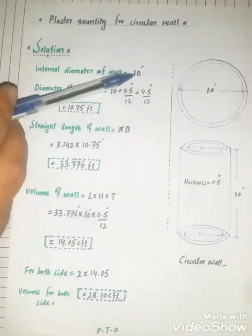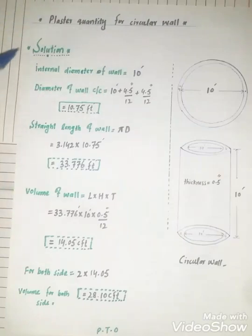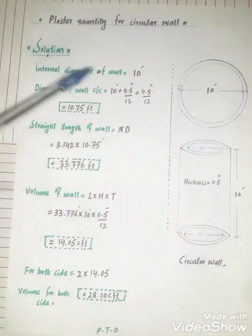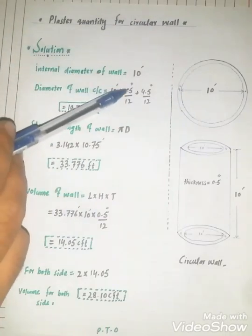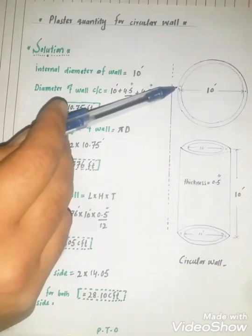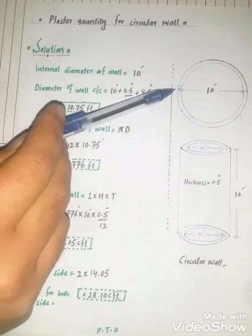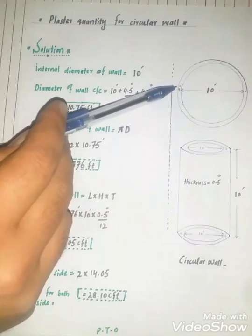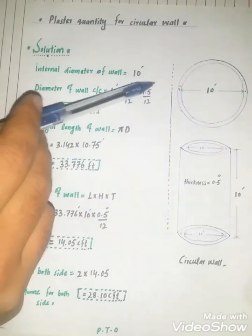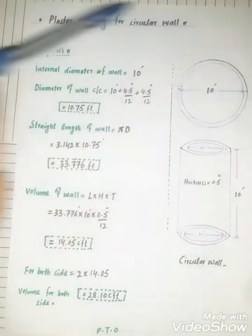Let's start the solution. Internal diameter of wall is 10 feet. Diameter of wall center to center is equal to 10 feet plus 4.5 inches divided by 12. This is the thickness of wall from one side. The overall thickness of wall is 9 inches and half of 9 inches is 4.5 inches, plus 4.5 inches from the other side.